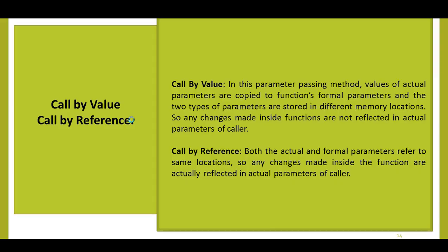Hello everyone. In this video we will discuss the concept of call by value and call by reference. Functions can be invoked in two ways: call by value or call by reference. In call by value, the values of actual parameters are copied to the function's formal parameters, and the two types of parameters are stored in different memory locations. The parameters passed to the function are called actual parameters, whereas the parameters received by the function are called formal parameters. Any changes made inside the function are not reflected in the actual parameters of the caller.